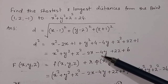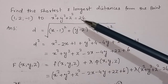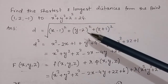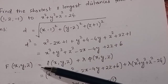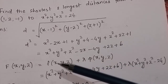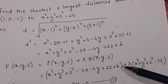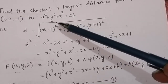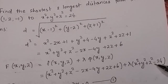This is the distance function and we have to find the minimum and maximum distance from this sphere. We will calculate the shortest and longest distance using the Lagrange multiplier. The objective function is d², and the constraint equation is x² + y² + z² = 24, written as x² + y² + z² - 24 = 0.